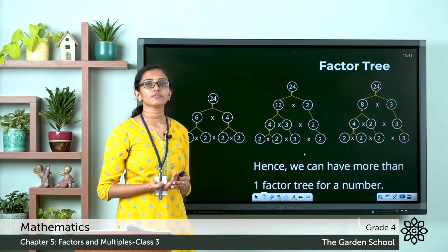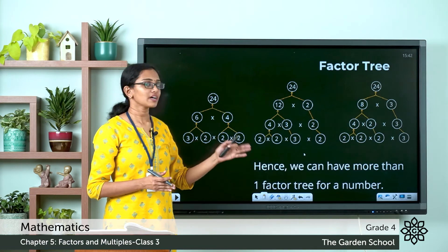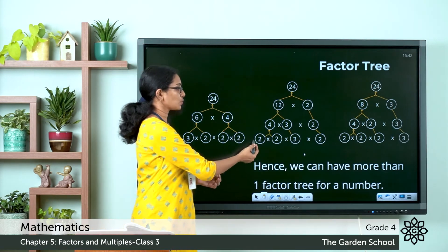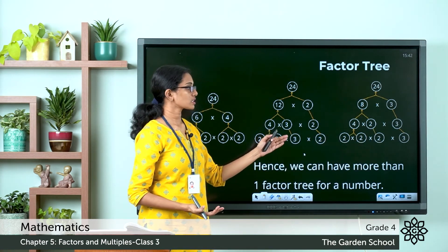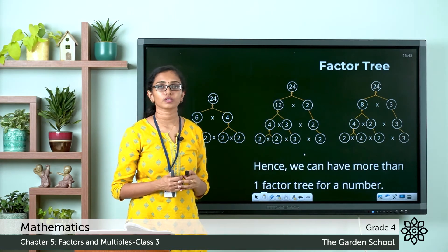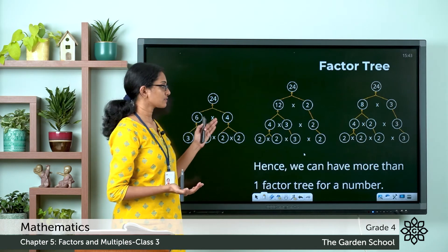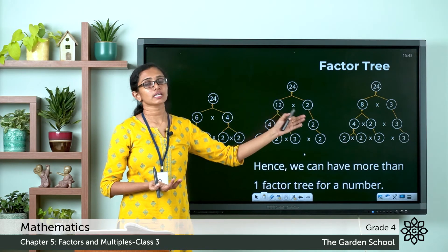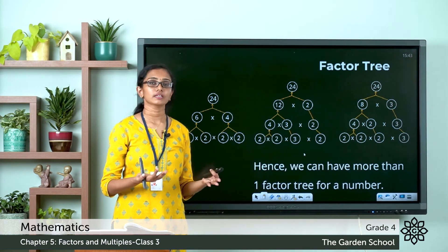Now these are the factor trees for all three cases. Did you notice that whichever factors you are considering, in each case the final factorization remains the same? It is 3 twos and 1 three — that is 2 into 2 into 2 into 3. When you multiply three 2s and one 3 you get 24. So the final factorization remains the same in all cases. Whichever factors you are considering, the final factorization remains unique. For the same number, different factor trees are possible, but the final factorization remains the same.